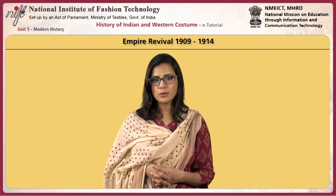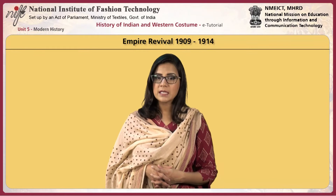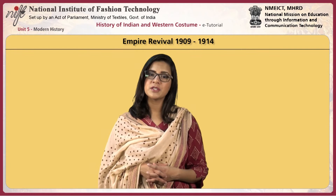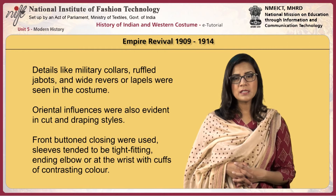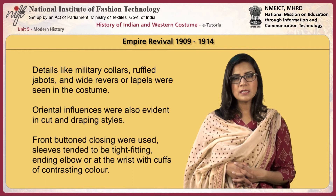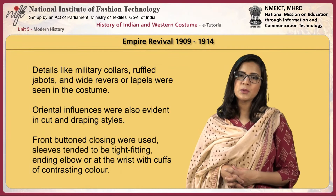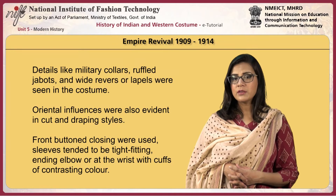The silhouette was becoming narrower and straighter. The waistline moved upward. Skirts narrowed and grew shorter, and the high-boned collars gradually went out of fashion. Details like military collars, ruffle jabots, and wide revers or lapels were seen in the costume. Oriental influences were also evident in cut and draping styles. Front buttoned closings were used. Sleeves tended to be tight-fitting, ending below or at the wrist with cuffs of contrasting colour. Skirts became so narrow at the hemline that they impeded walking — these were called hobble skirts. Slits had to be made to enable comfortable walking. Peg-top skirts and tunics worn over undershirt skirts were also popular.